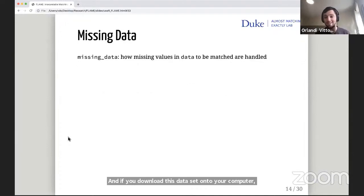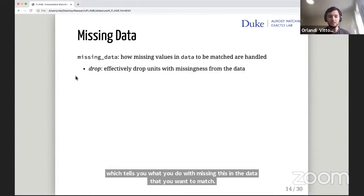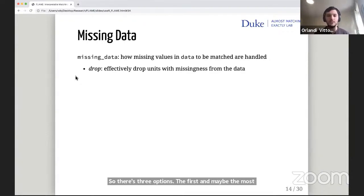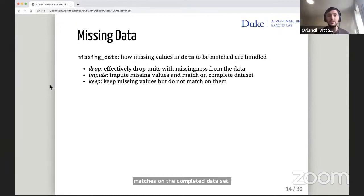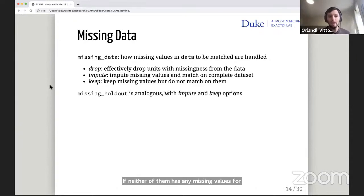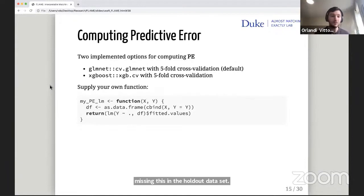There's a missing_data argument to Flame and Dame which tells you what you do with missingness in the data you want to match. There's three options. The first is just to drop the units with missingness. If you're missing anything, you're not going to match that unit. The second imputes the missing values via MICE and then matches on the completed data set. The third keeps missing values in the data but doesn't allow for matches on them. Two units are only going to match on a covariate set if neither of them has any missing values for any of those covariates. Then there's an analogous argument for dealing with missingness in the holdout data set used to compute predictive error.